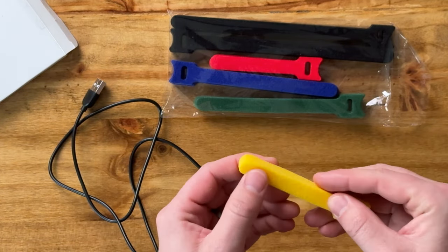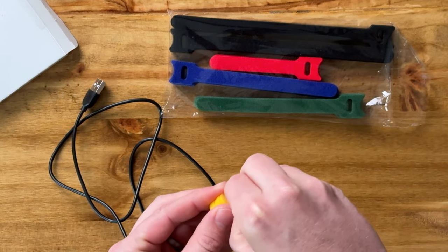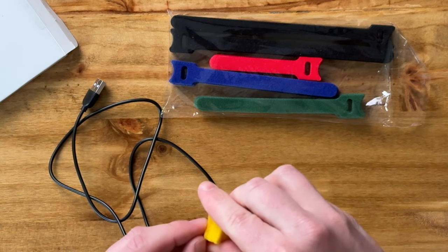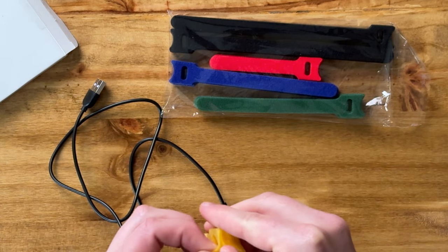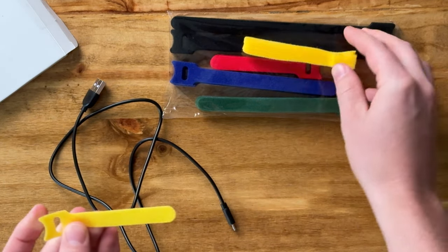They're very soft on one side—it's like felt—and the other side's velcro. I'll pull one off. The velcro is super strong, which is what you want, so you just have to pull hard like that.